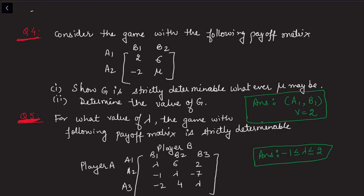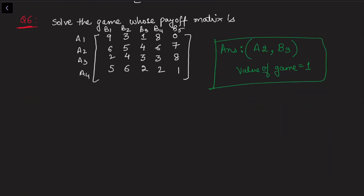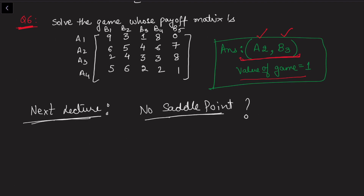You can try Questions 4 and 5 in a similar manner: Question 4 asks for which values of mu the game is strictly determinable, and Question 5 asks for what value of lambda the game is strictly determinable. Question 6 also asks to solve the game whose payoff matrix is given — in that case, the value of the game is equal to 1. In the next lecture, we will discuss how to proceed when there is no saddle point.